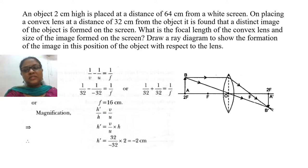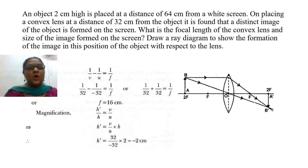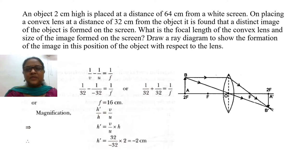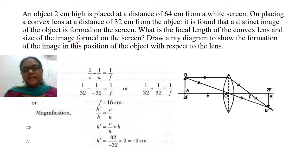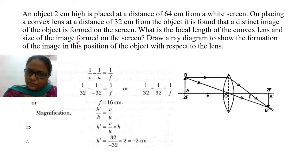An object 2 cm high is placed at a distance of 64 cm from a wide screen. On placing a convex lens at a distance of 32 cm from the object, it is found that a distinct image of the object is formed on the screen. What is the focal length of the convex lens and the size of the image formed on the screen? Draw a ray diagram to show the formation of the image in this position of the object with respect to the lens.